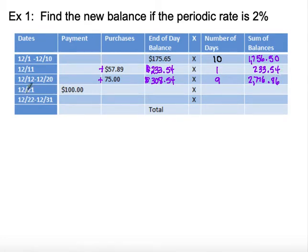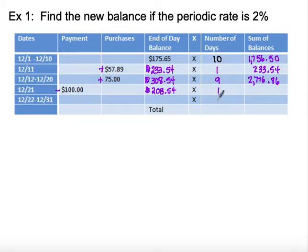On December 21st they received a payment of $100.00. We subtract that off the end-of-day balance, so now the end-of-day balance is $208.54 for one day. We'll add $208.54 to the sum.